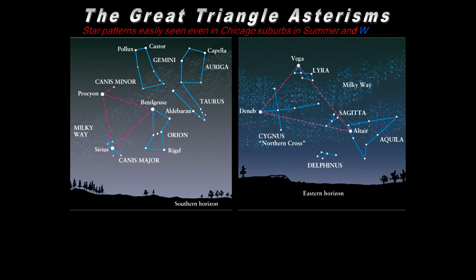Well, two great asterisms, very common ones, well-known ones, the Great Triangle asterisms. We have the Winter Triangle and we have the Summer Triangle. And the Winter Triangle again is associated with Orion. Betelgeuse forms one of the stars...